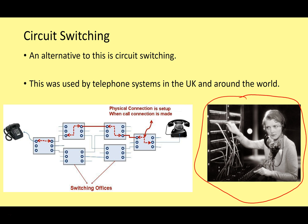Looking at the diagram, we've got two telephones here and here. Between them, we've got all these switching offices where operators had to make these connections to form a temporary direct path from one telephone to the other, so people can send and receive information and make calls.